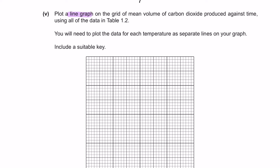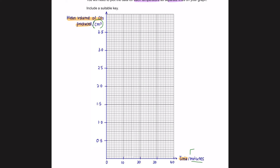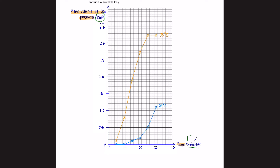Part 5: Plot a line graph of mean volume of CO₂ produced against time using all data in table 1.2, with separate lines for each temperature and a suitable key. The mean volume goes on the y-axis and time on the x-axis — don't forget to include units. Plot the data from the table; you will observe two lines, one for 35°C and one for 25°C. Make sure to label them accordingly.